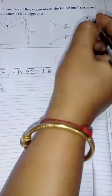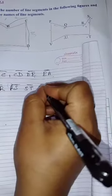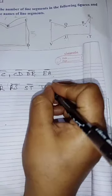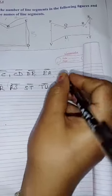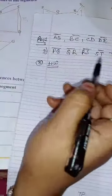For figure number two, the line segments are: PQ, QR, RS, ST, TU, UB, and BP. The third figure I am leaving as your homework — you will count the line segments and write their names the same way I have done for figures one and two.